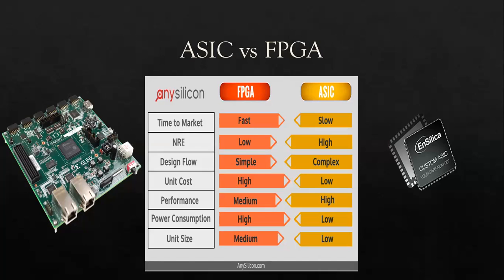The design flow is very much more complex for ASICs. However, ASICs are produced in bulk — like millions at a time — so the unit cost comes down significantly. The performance is also higher for ASICs compared to FPGAs. Power consumption is low, and the unit size for ASICs is also small.